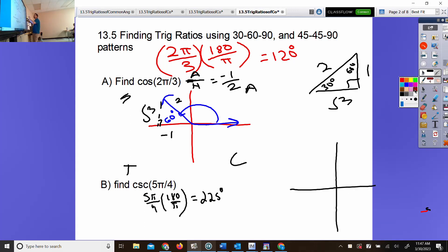225 degrees terminates in what quadrant? 3. What's the measure of separation between the terminal side and the negative x-axis? 45 degrees. So you've got a 45-degree reference angle. You have a 45-45-90 pattern. Reference angles are formed with the x-axis, not the y-axis.